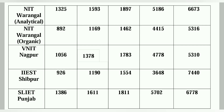NIT Warangal में chemistry के लिए दो streams हैं — एक analytical specialization और एक organic specialization। Classes दोनों के एक साथ होती हैं, लेकिन third semester से specialization अलग होता है। Organic का demand ज़्यादा होने के कारण organic का cutoff कम rank पर close हो जाता है, जबकि analytical के लिए cutoff थोड़ा high जाता है।